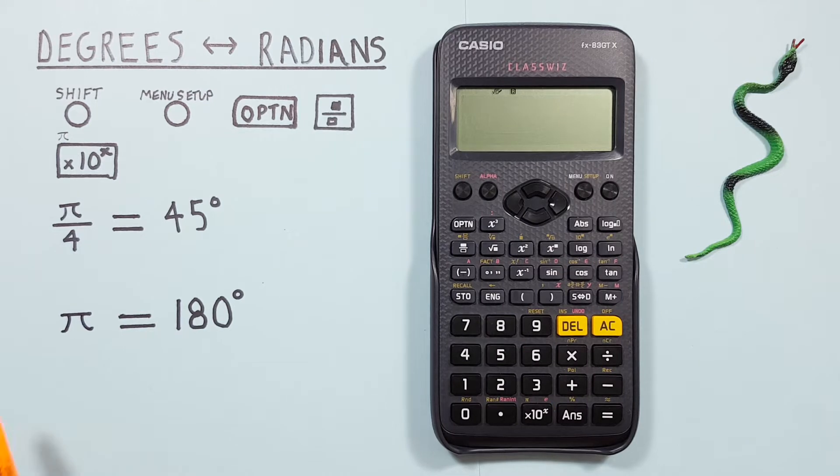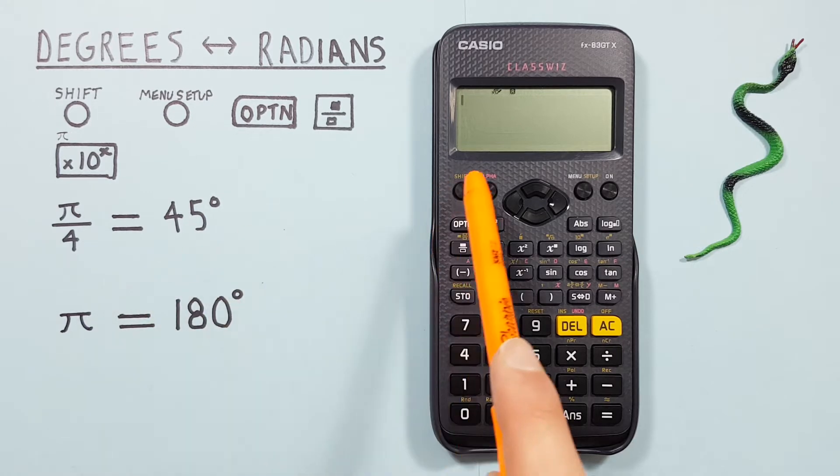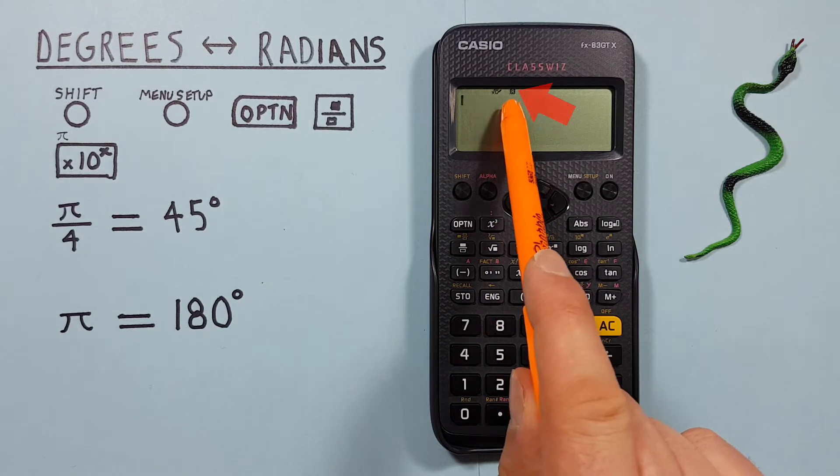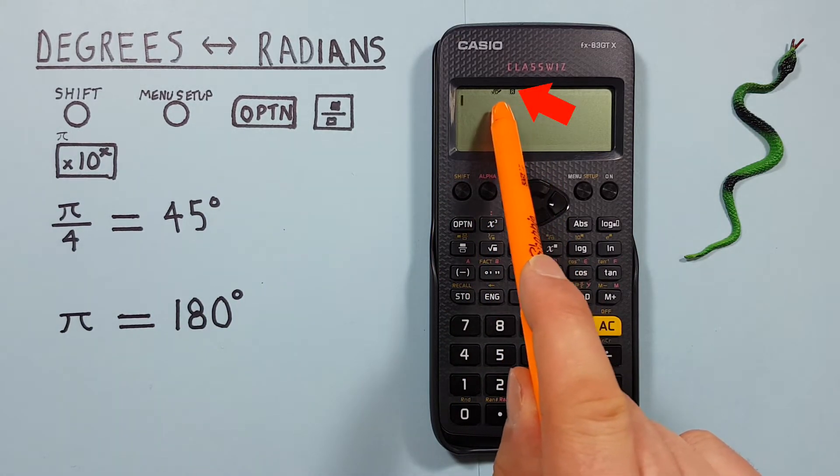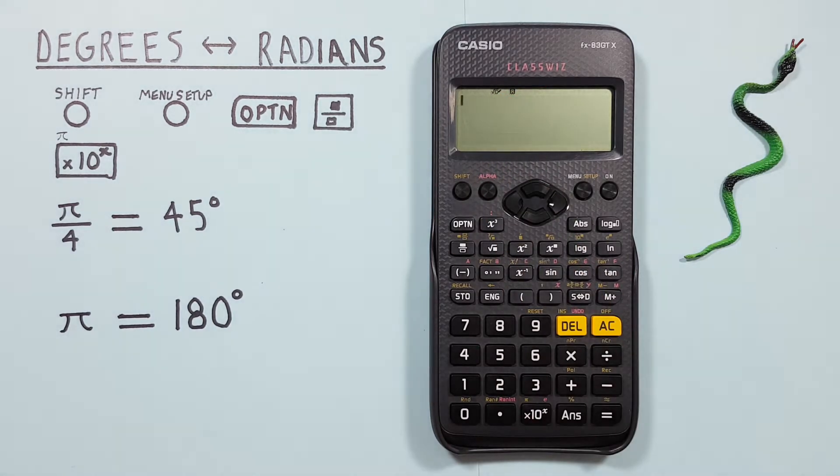Let's say we were given this value here, π over 4 in radians, and wanted to convert that to degrees. To do that, we would first want to set our calculator to the mode we want our results in, which would be degrees. If we look at our calculator right now, we see an R at the top of the screen. That tells us our calculator is in radian mode, so we want to change that to degrees mode.